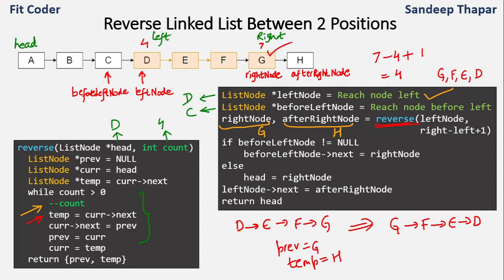The reverse function returns pointers to G and H after reversing the portion from D to G. Once it returns, we connect the other portions. In this method we traverse the linked list only once and use no extra space, so space complexity is O(1) and time complexity is O(n).